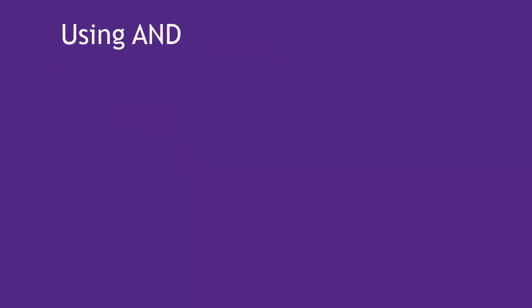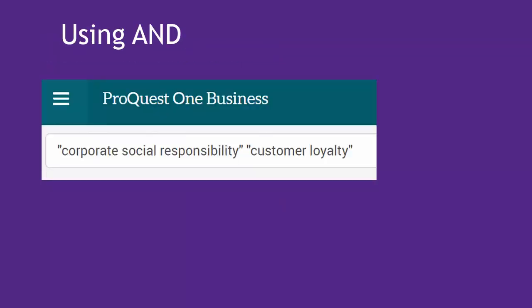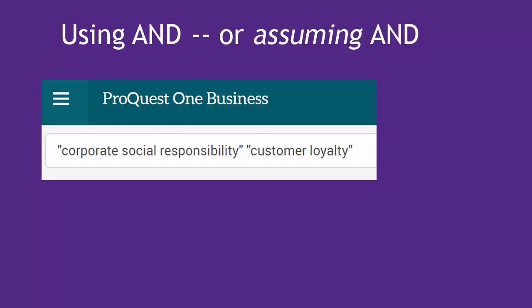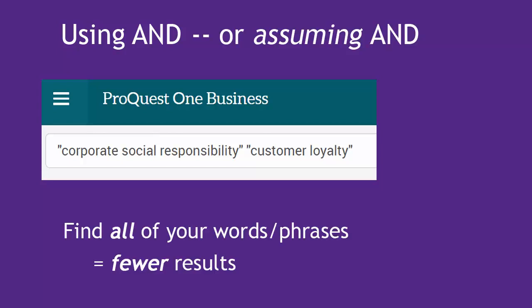If you don't type in any Boolean commands, as we've done in our searches so far, the database assumes AND, which means it assumes you want to find ALL of your search words or phrases. That's logical, and that works most of the time. You will get fewer results the more words you add to your search with AND.